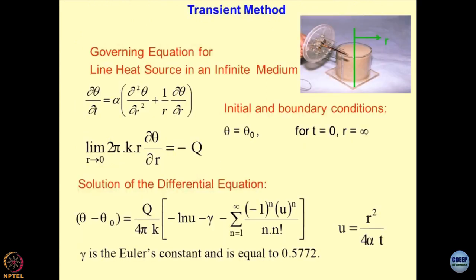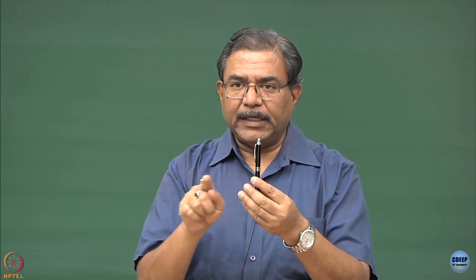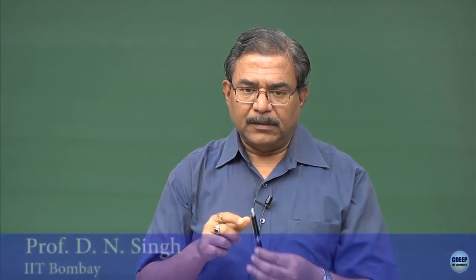A little bit about this transient method. Basically, the probes which I have shown you act as a line heat source. Truly speaking, this is a line heat source and the heat is getting emitted in the radial direction. That means the heat source happens to be a line.